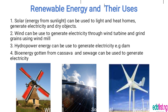Wind can be used to generate electricity through wind turbines and grind grains using windmills. Hydropower energy can be used to generate electricity. Bioenergy, gotten from cassava and sewage, can be used to generate electricity as well.